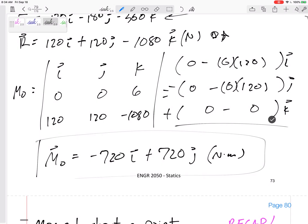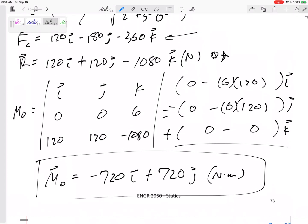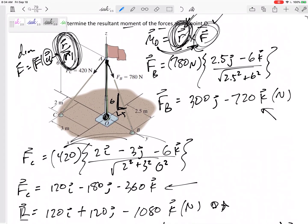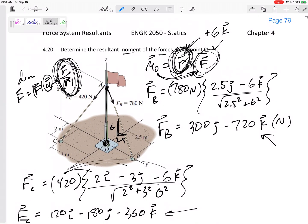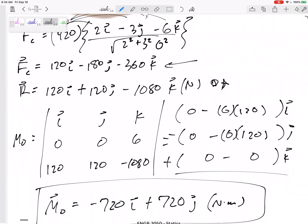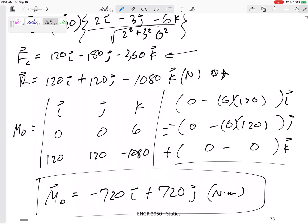There we go. Moment about a point. So that kind of concludes a moment about a point. What's the main idea? Notice that it's asking for a moment, notice that it's asking for a moment about a point, and it's R cross F. The R goes from the point to the force. The F is just the force, but make sure it's written correctly in vector form or Cartesian notation.